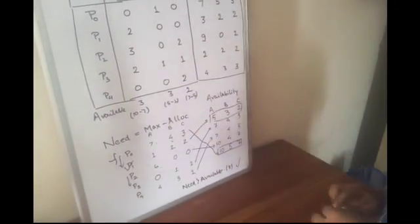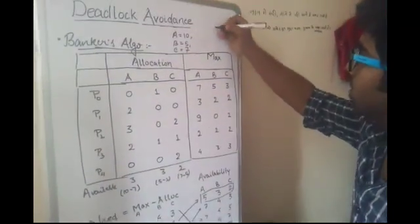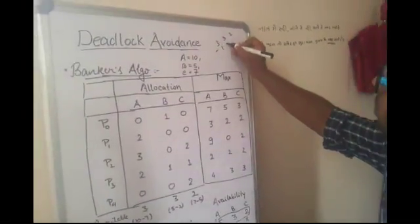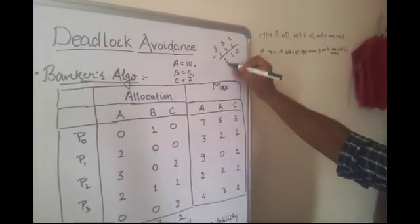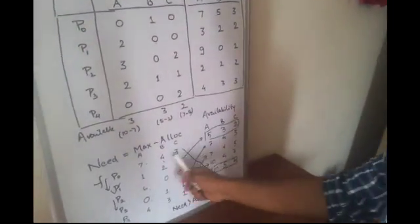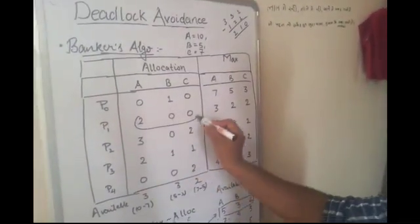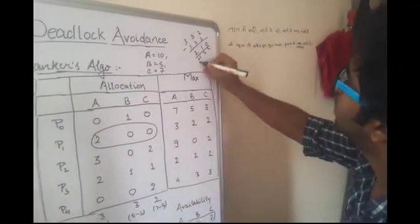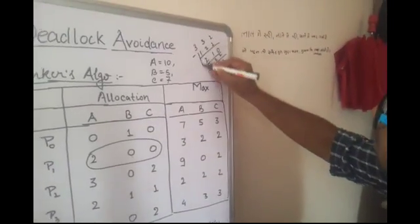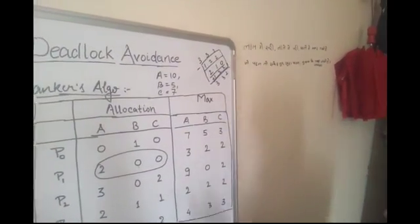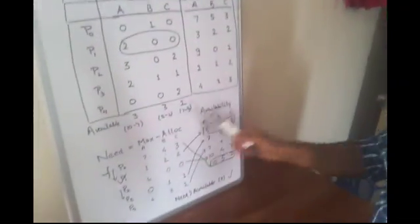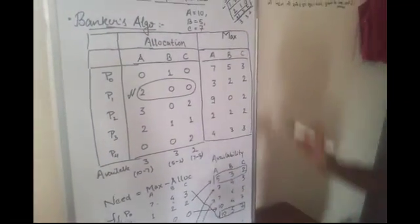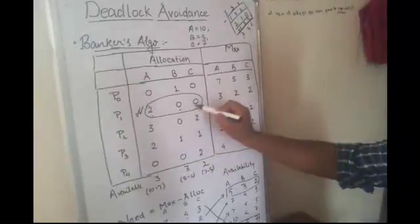So P1 takes 1, 2, 2 from availability, which gets reduced. But after executing itself, it releases its resources plus what it had been allocated earlier. Logically you can understand: it first uses the resources it needs, then it releases those resources along with what it had earlier occupied. So it becomes 3, 3, 2 plus 2, 0, 0, which becomes 5, 3, 2. So P1 gets executed.